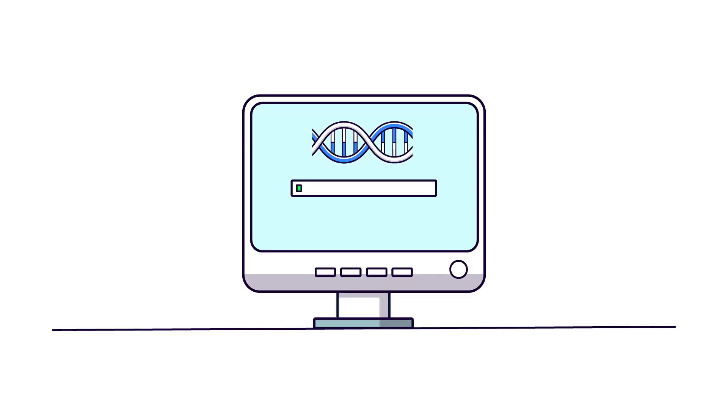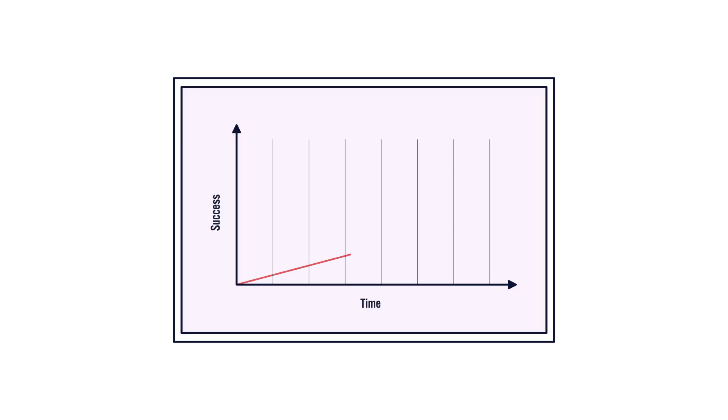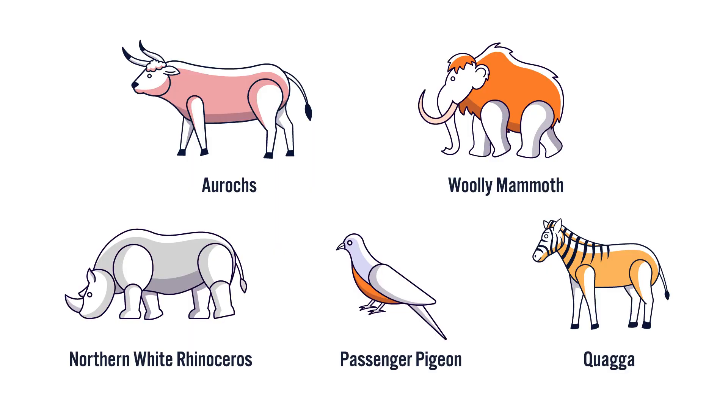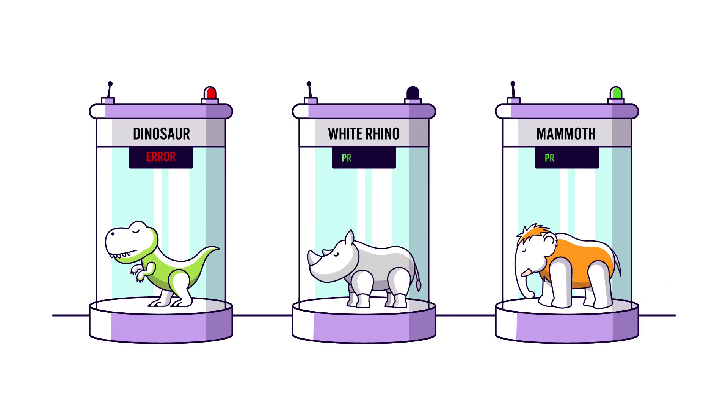However, so far, no de-extinction project has successfully revived an extinct species to the point of reintroduction into the wild. However, several ambitious projects are making significant progress, like efforts to restore the aurochs, revive the woolly mammoth through genetic engineering, implant northern white rhinoceros embryos, and even revive the passenger pigeon and quagga. These projects illustrate that while dinosaurs remain out of reach, the science of de-extinction is advancing rapidly for some species.